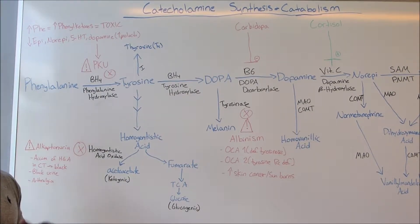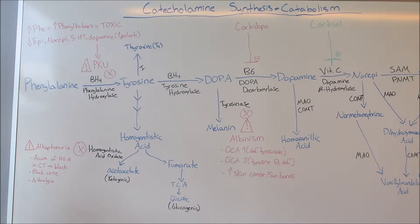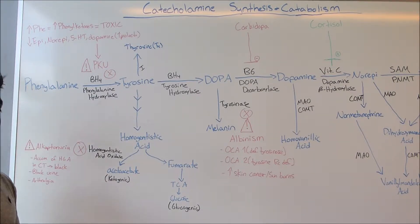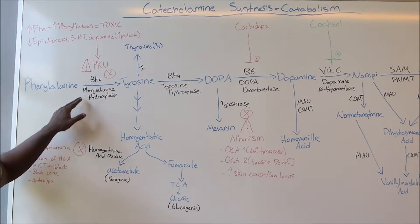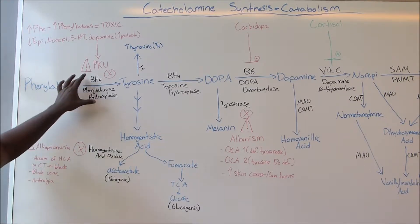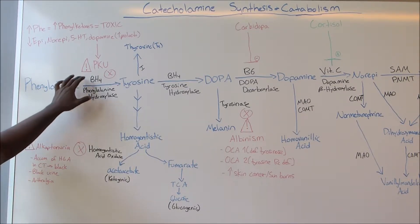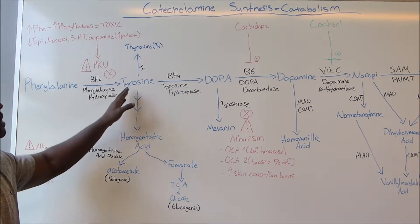Let's start with our starting amino acid, phenylalanine. Phenylalanine is going to get hydroxylated, meaning that an OH group is going to be added, which makes sense because the enzyme that does this is phenylalanine hydroxylase. It should also be noted that BH4 is an important cofactor paired with this hydroxylase. Next, we're going to have the formation of tyrosine as a result.